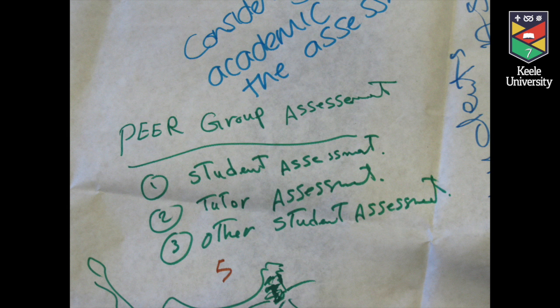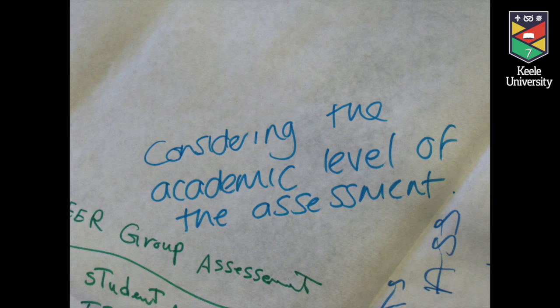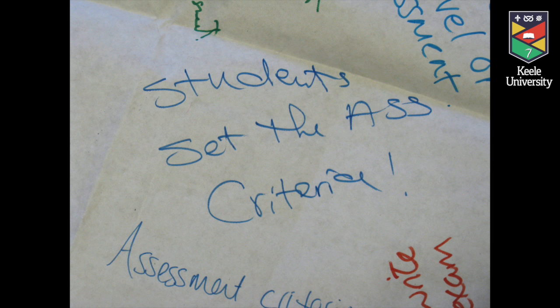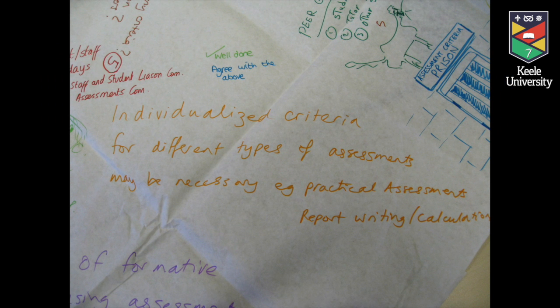Our question was about approaches to engaging staff and students in conversations around assessment criteria, with two main areas of focus. One was around making the criteria available to staff and students so that they were there for conversations among staff about consensus on what matters, and for students about making sure they knew where to find them and were able to understand what they meant.